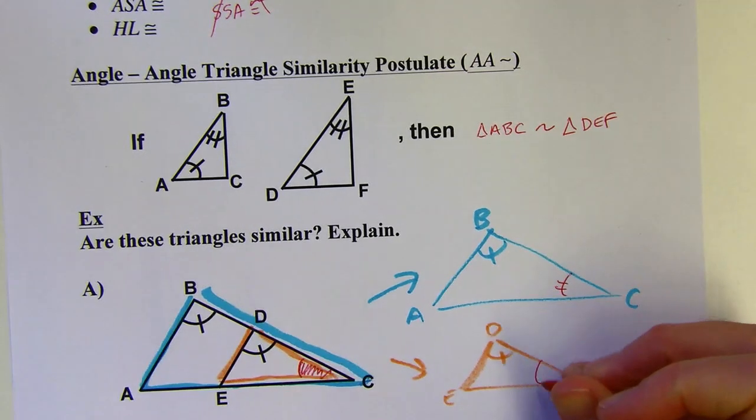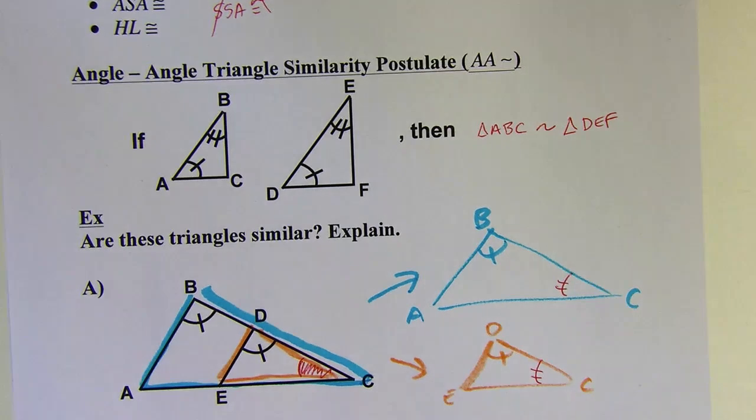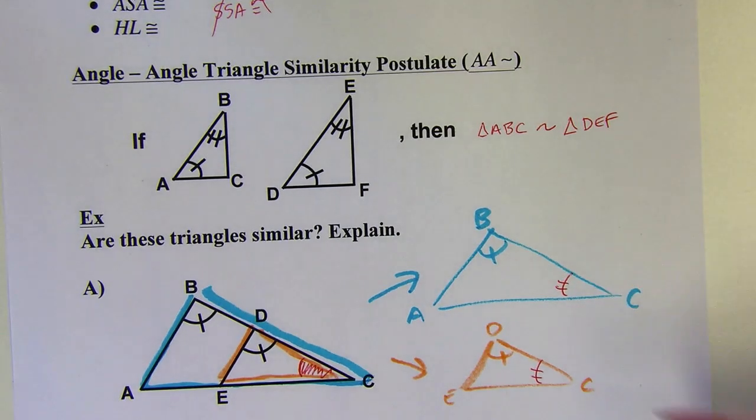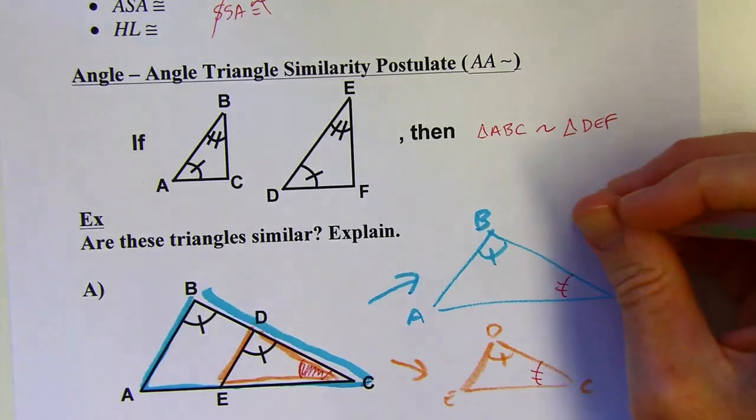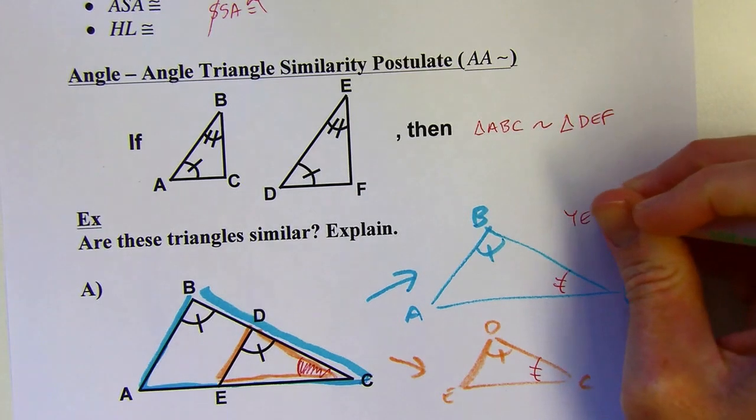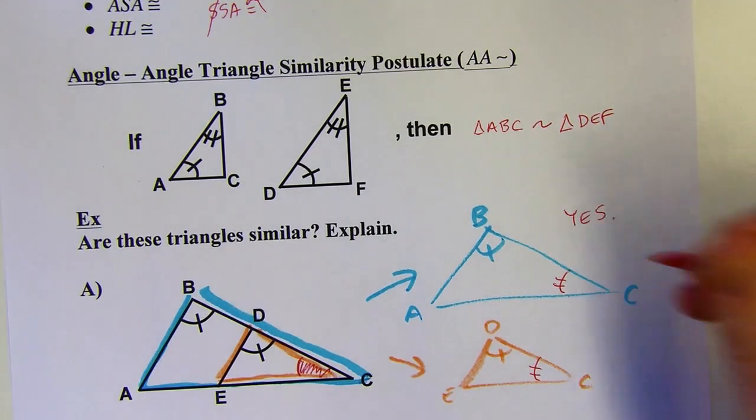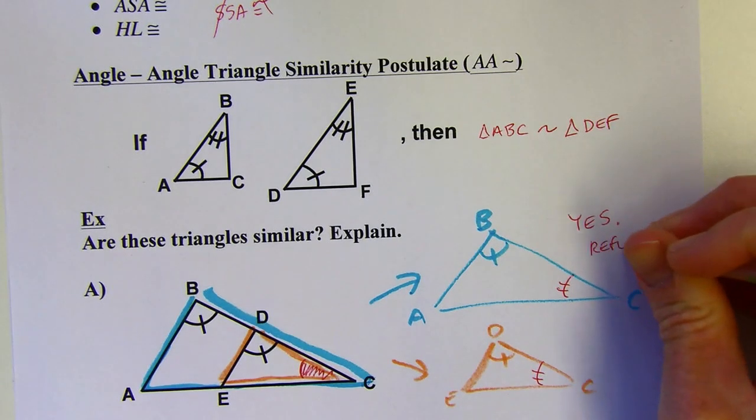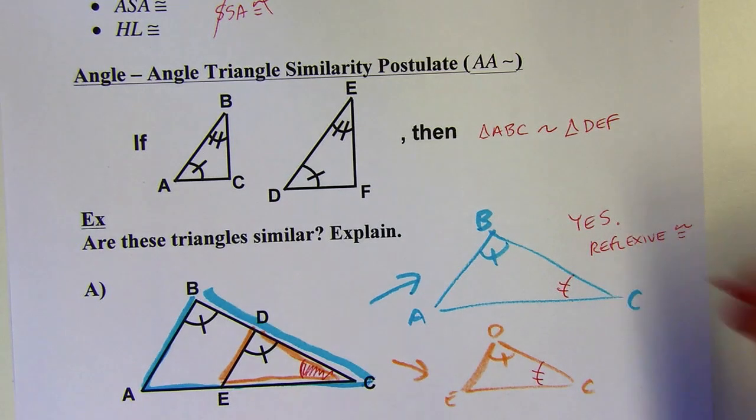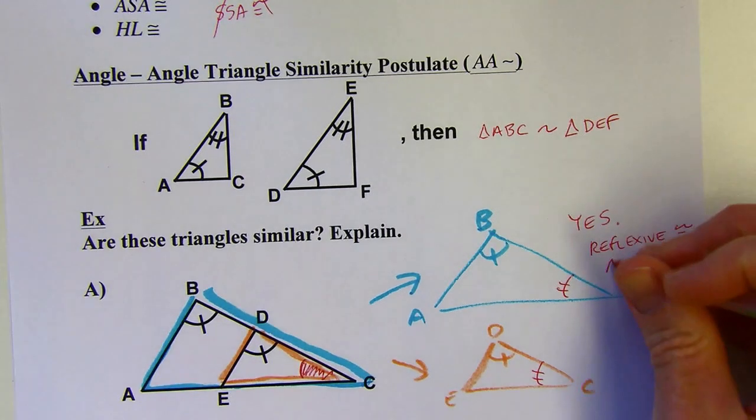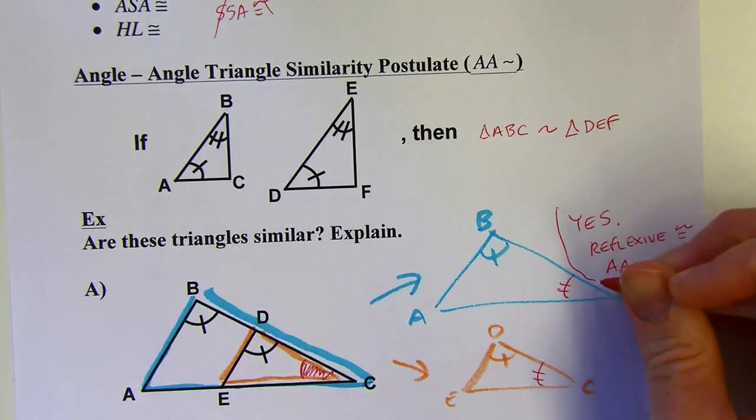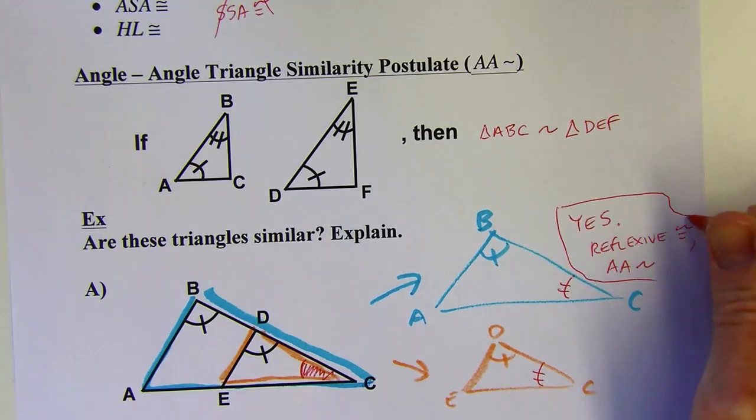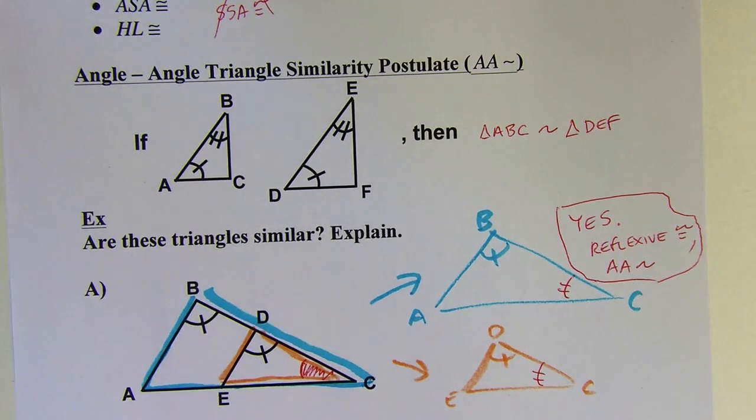So I can use the reflexive property of congruence to say angle C is congruent to itself and it's in both the different triangles, and now I've got enough for AA. For part A, my answer is going to be yes, they are similar. My explanation: I used reflexive property of congruence, and then the AA similarity theorem. My explanation is just saying what theorems or postulates you're using.